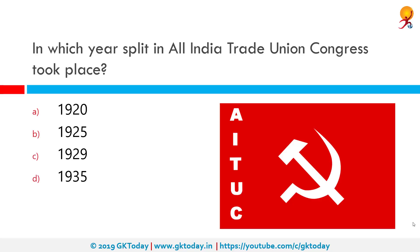In which year did the All India Trade Union Congress split? The correct answer is 1929. The All India Trade Union Congress is the oldest trade union federation in India. It is not politically affiliated to any political party including the Communist Party of India, but itself is the third largest communist party in India after CPI and CPI-M.